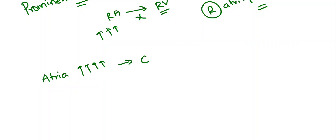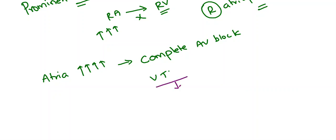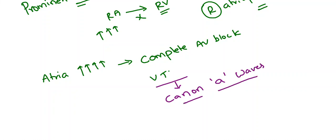In ventricular tachycardia also, this situation occurs. These very large A waves have a specific name — they are called Canon A waves. These are even bigger A waves seen in complete AV block and ventricular tachycardia.